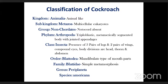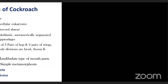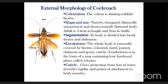The external morphology of cockroach: the color is shining reddish-brown. The shape is narrow, elongated, bilaterally symmetrical, and dorso-ventrally flattened. The adult is 3 to 4 centimeters in length and 2 centimeters in width. The body has three major segments: head, thorax, and abdomen. The exoskeleton is thick, hard, chitinous, and jointed, forming a ring with four hardened plates called sclerites.